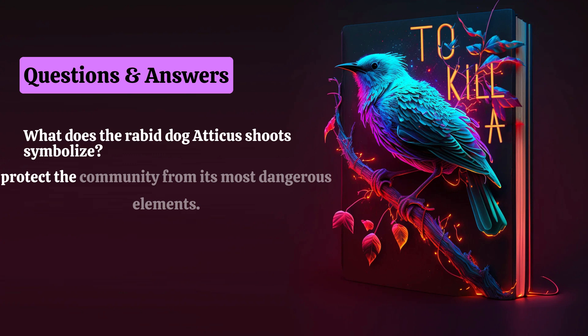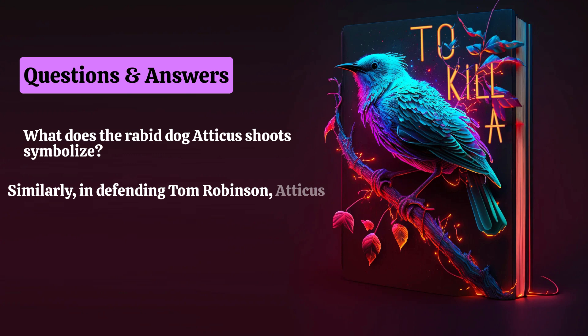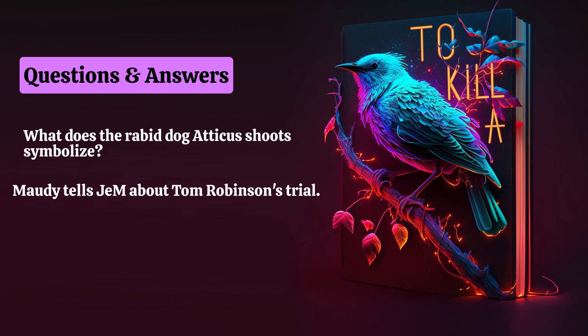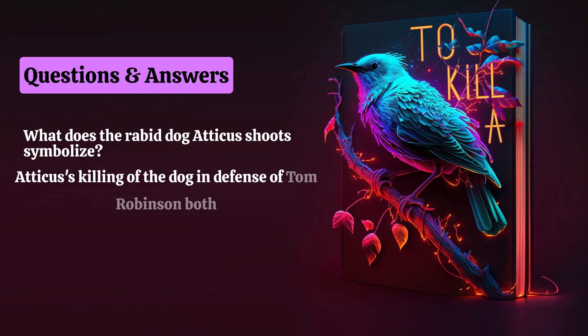Similarly, in defending Tom Robinson, Atticus tries to protect the community from its most dangerous, racist tendencies. Later in the book, in Chapter 22, Miss Maudie tells Jem about Tom Robinson's trial: 'I simply want to tell you that there are some men in this world who were born to do our unpleasant jobs for us. Your father's one of them.' Atticus's killing of the dog and his defense of Tom Robinson both reflect that he is willing and able to take on things that the rest of Maycomb is unequipped to face.